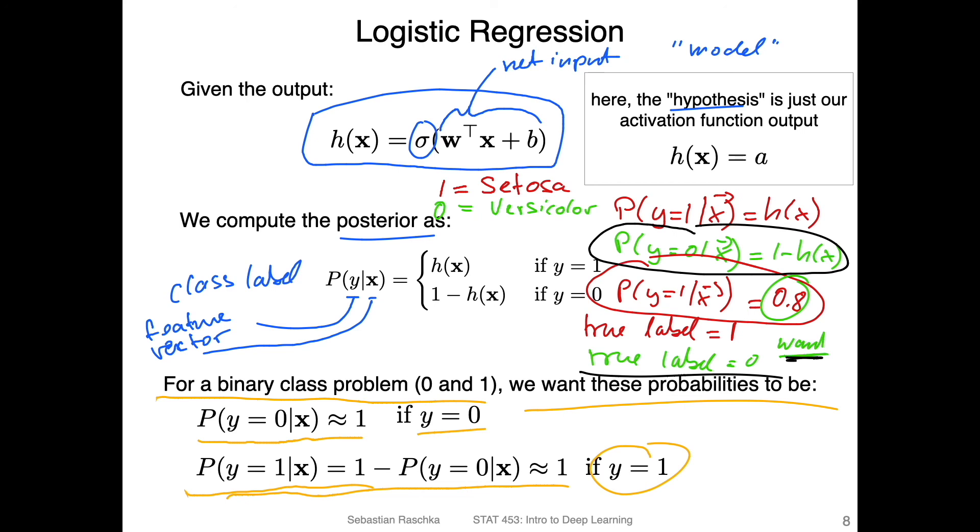We can also think of it like this: If we have a Setosa label, we want this one to be large, which gives us the scenario for class one. So if we have a Setosa case, make this one large and make this one small. However, if we have a true label Versicolor, then make this one small and make this one large. This is essentially what we want to achieve, and I will show you how we can do that in the next video.